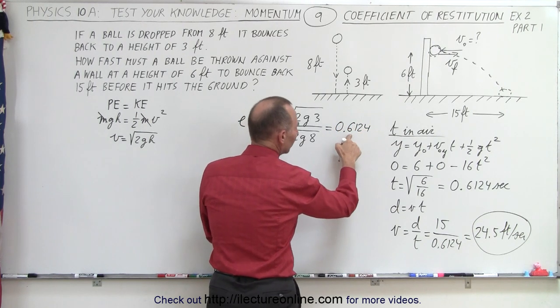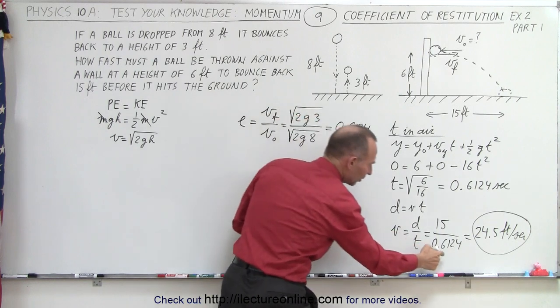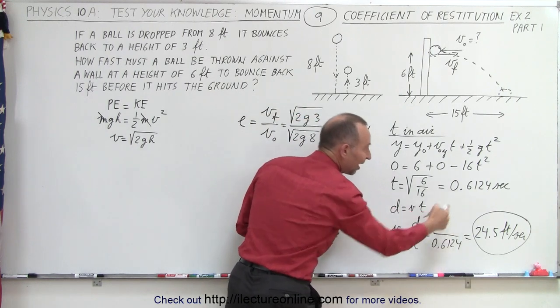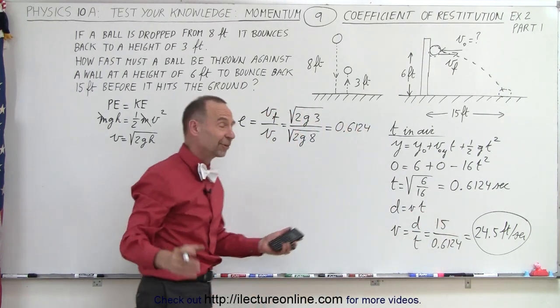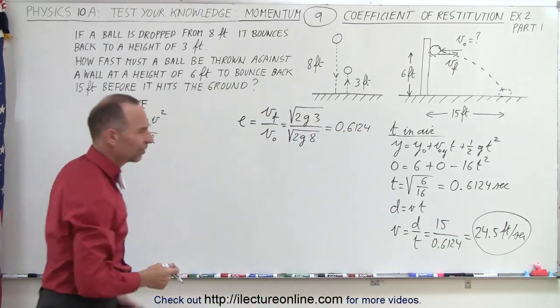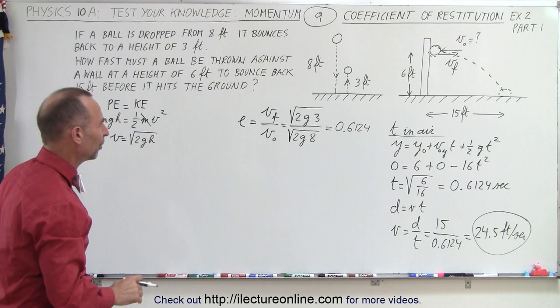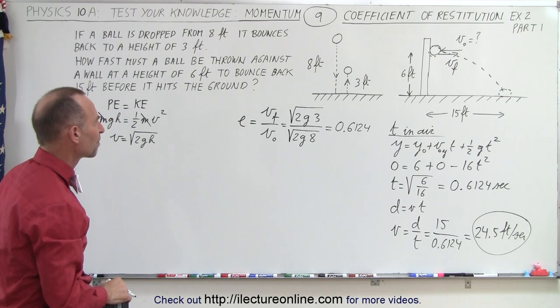Interestingly, that coefficient of restitution value of 0.6124 is the same number as the time we calculated earlier. Is that really a coincidence? We'll find out.